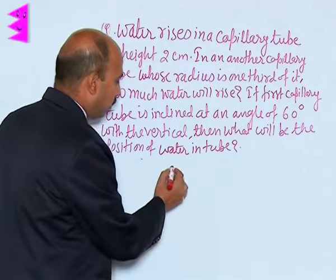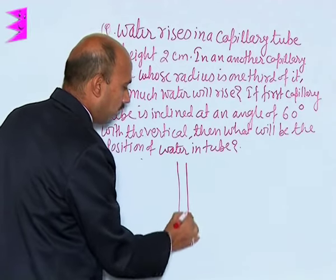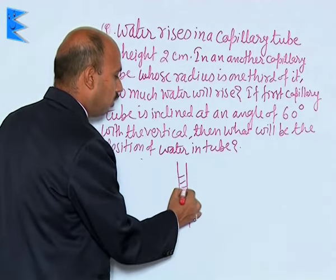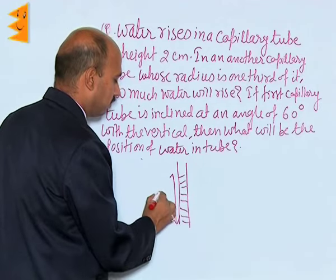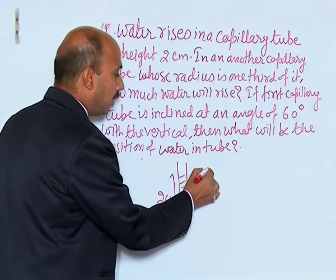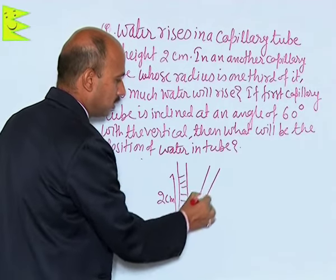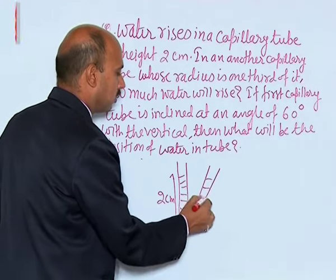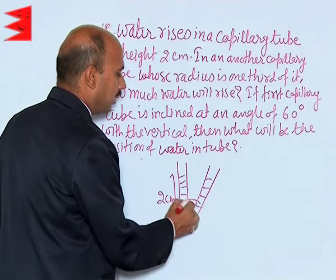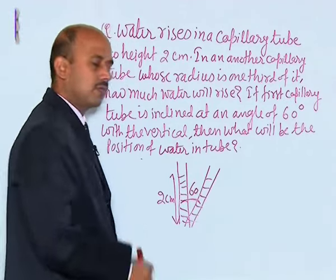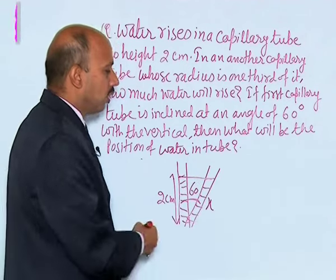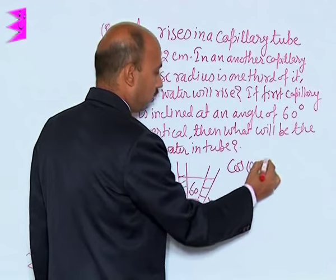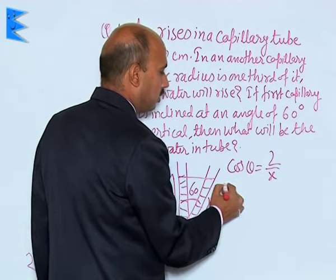Now see, suppose initially the capillary tube was like this and the rise of the liquid was here up to the height of 2 centimeters. Now this capillary tube is inclined like this and this angle is 60 degrees. We can easily calculate this. This is suppose x. We can write here cos θ is equal to 2 upon x.